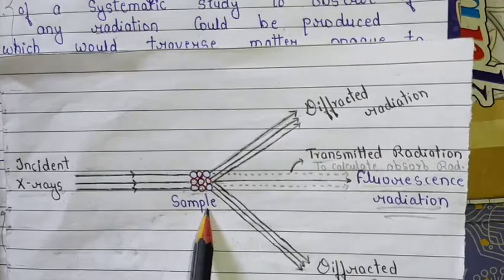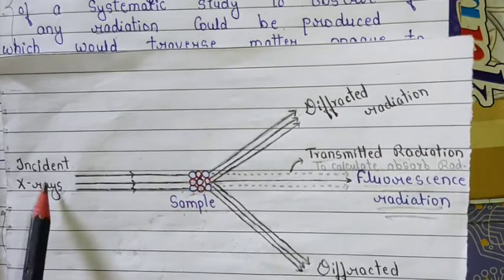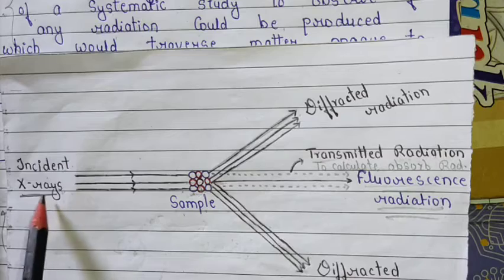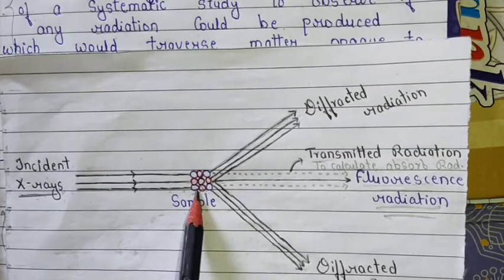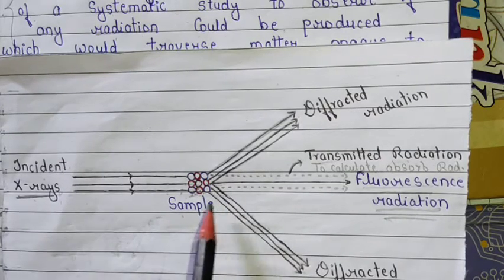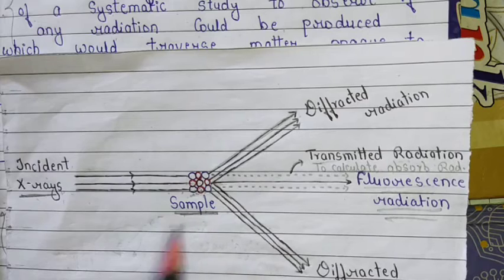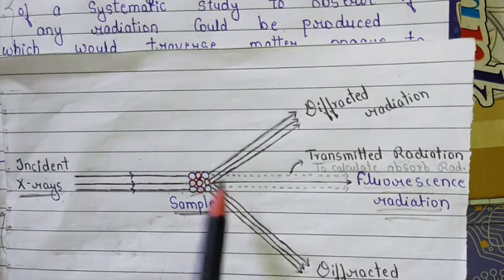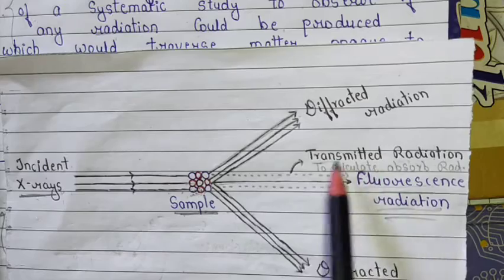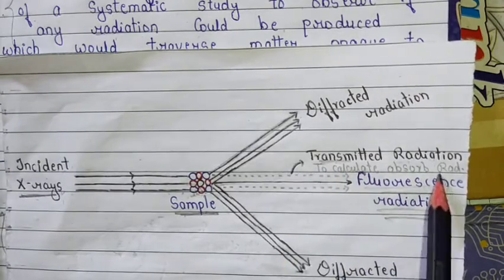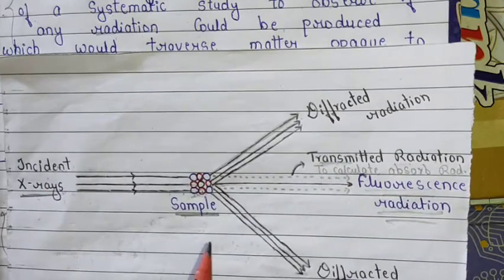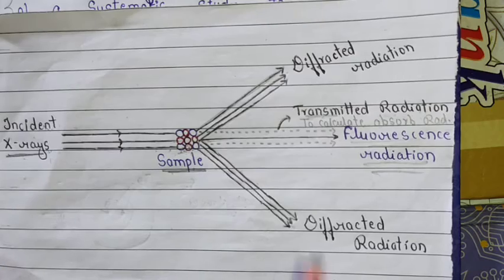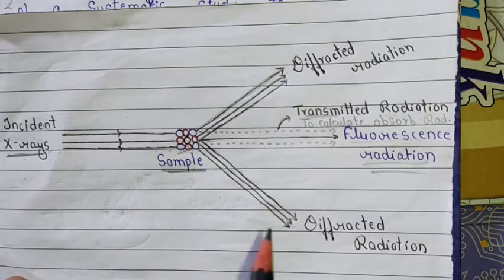This is the incident X-ray and this is the sample. The sample absorbs some radiation when X-rays are bombarded onto it — that is known as absorbed radiation. The rest of the radiation is transmitted by the sample, and that is known as transmitted radiation. To calculate the absorbed radiation, we subtract the transmitted radiation from the incident radiation to get the amount of radiation absorbed by the sample.